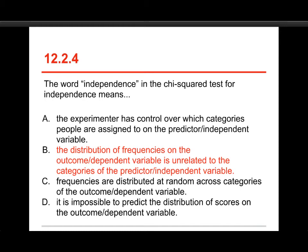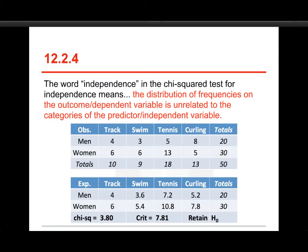That the independence in the test for independence means that the distribution of frequencies on the outcome variable is unrelated to the categories of the predictor variable. This is just an example of when you would use independence here, and what we're trying to do here, actually what we have here is independence. I have these observed values.